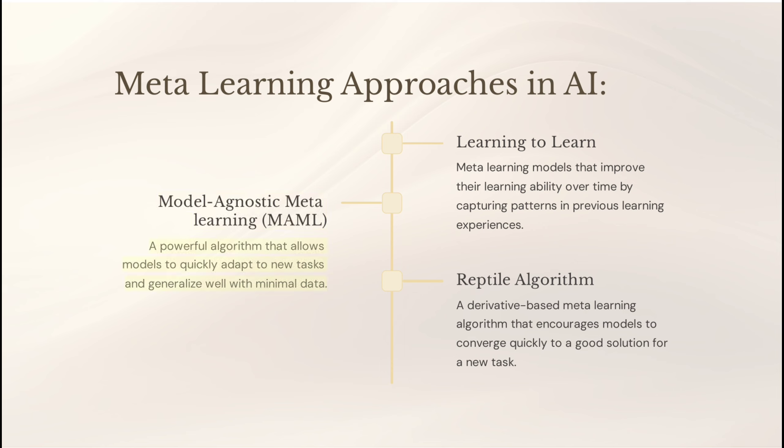MAML is a powerful algorithm that allows models to quickly adapt to new tasks and generalize well with minimal data. The Reptile algorithm is a derivative-based meta-learning algorithm that encourages models to converge quickly to a good solution for a new task.